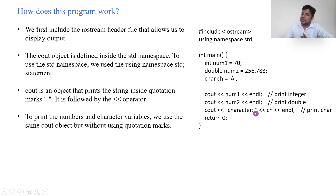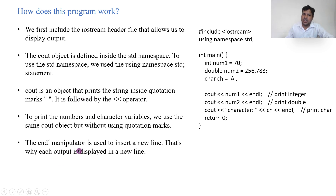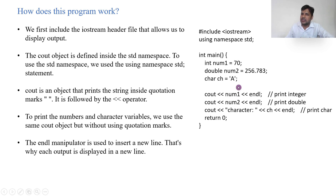If you write with quotation marks it will print as a string literal, but if you don't use quotation marks it considers it a variable and prints the value of that variable. The endl manipulator is used to insert a new line, so every output is displayed on a new line. When we use endl in cout, it moves the cursor to the next line.